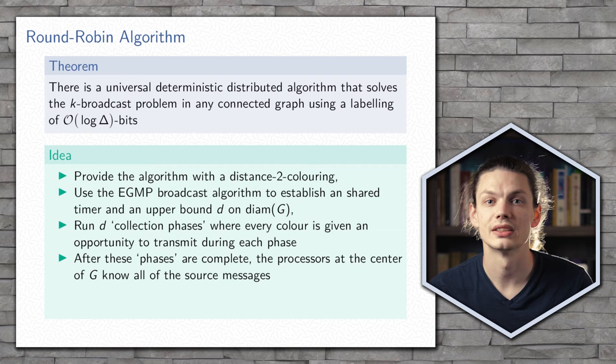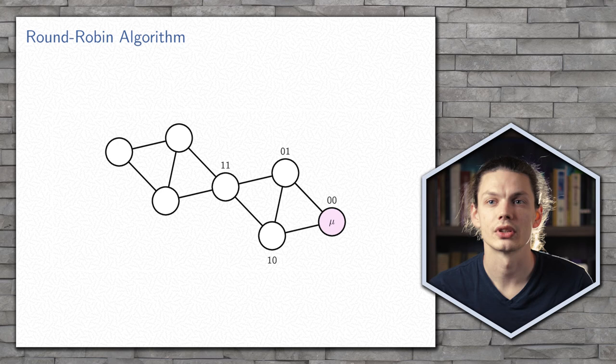We run D phases where every color is given the opportunity to transmit, so each source message progresses one step closer to that coordinator node. After D phases, all of the source messages will have collected at the coordinator, who can then rebroadcast them out to the entire network.